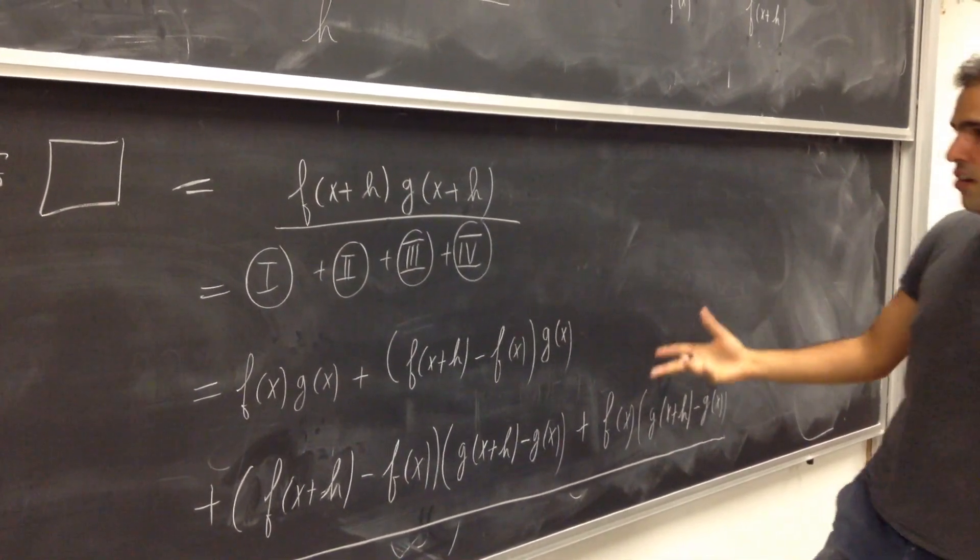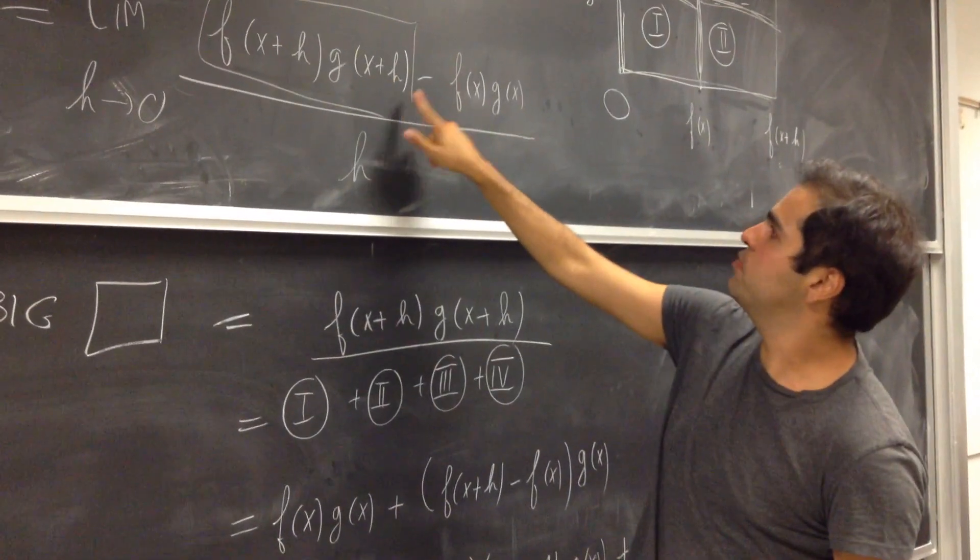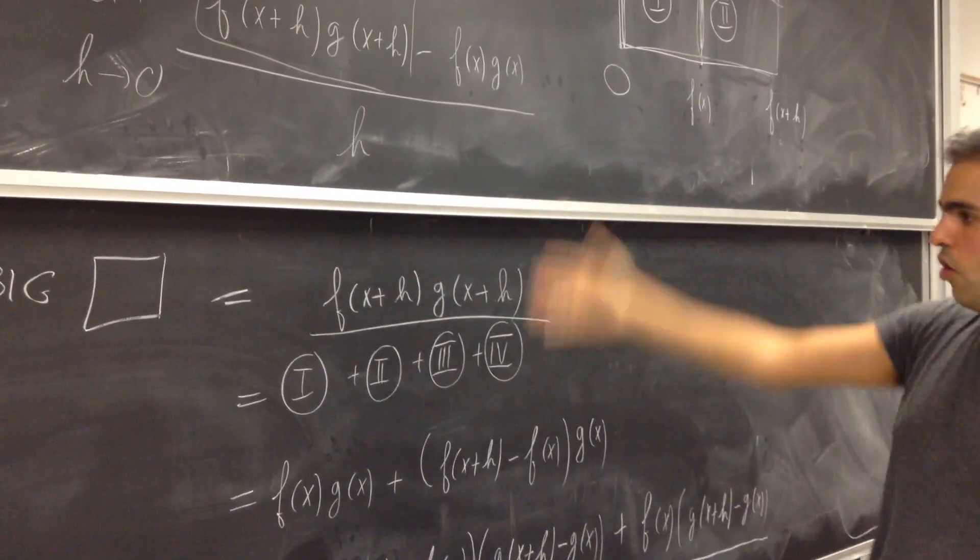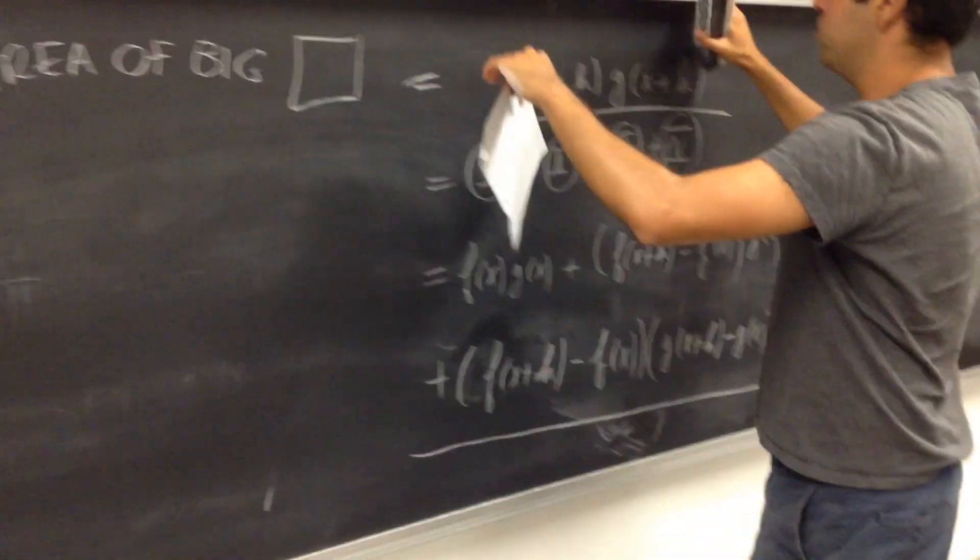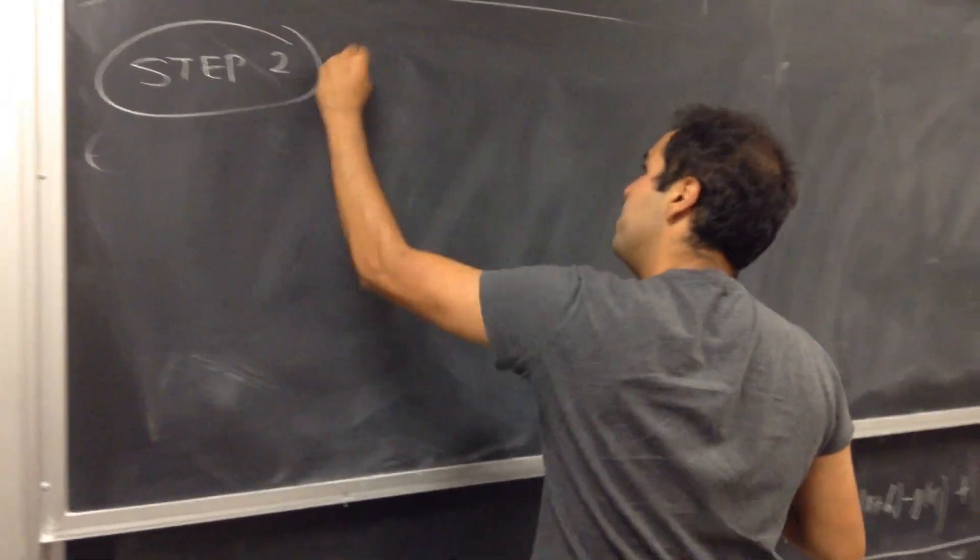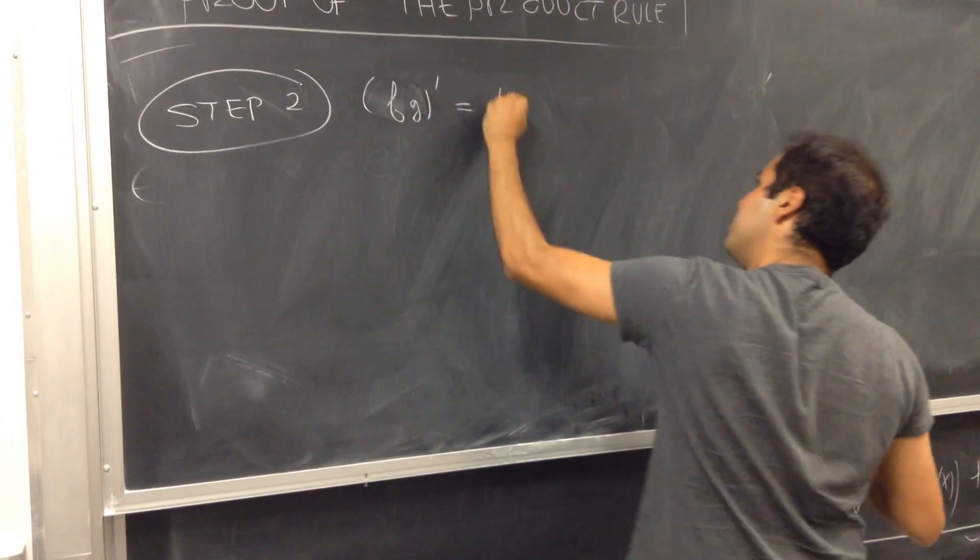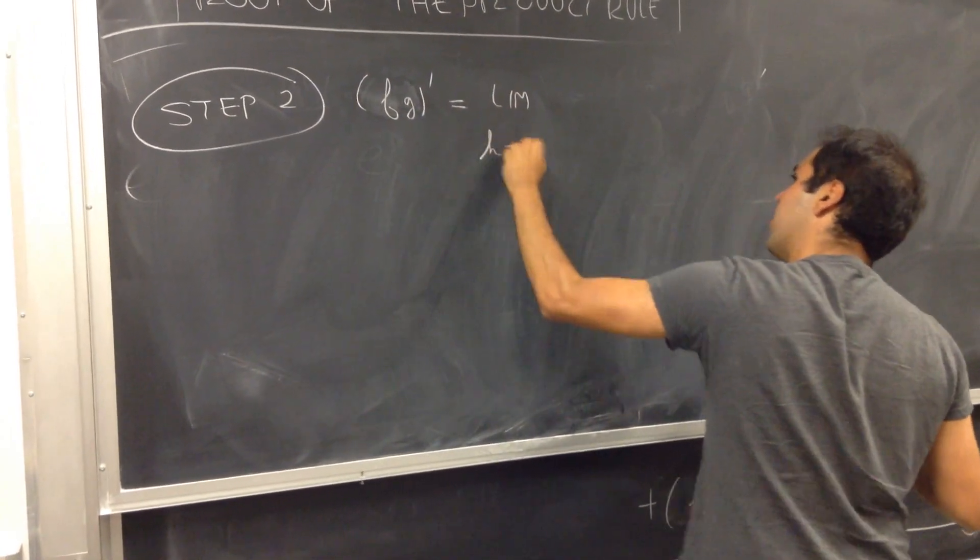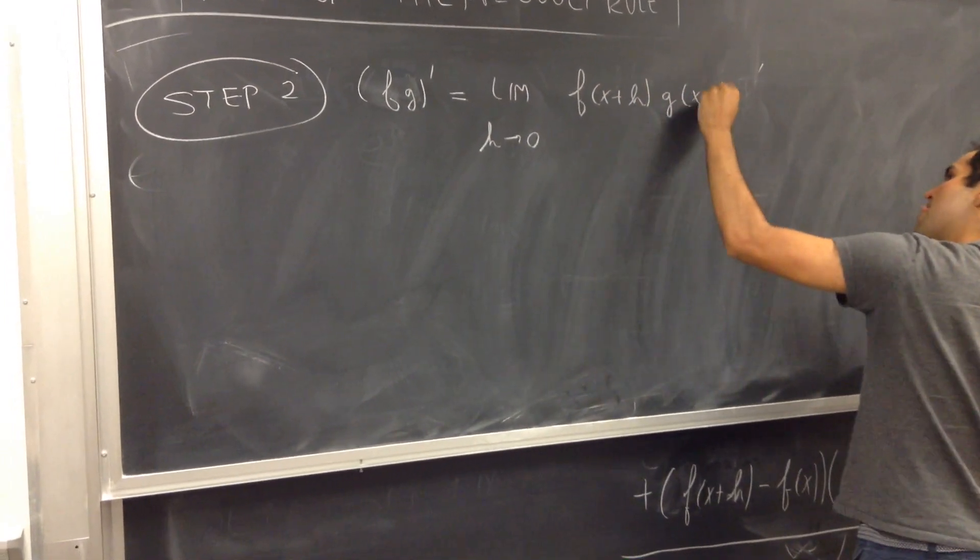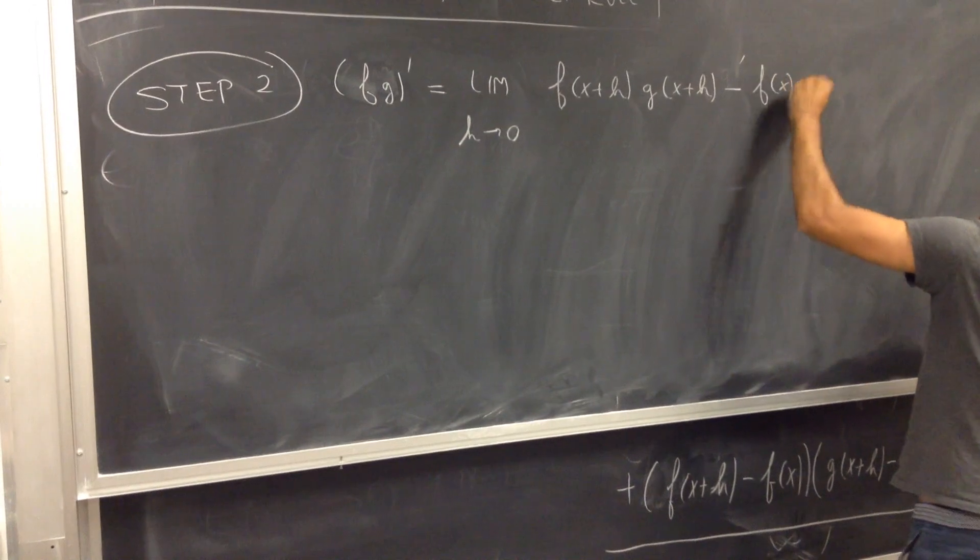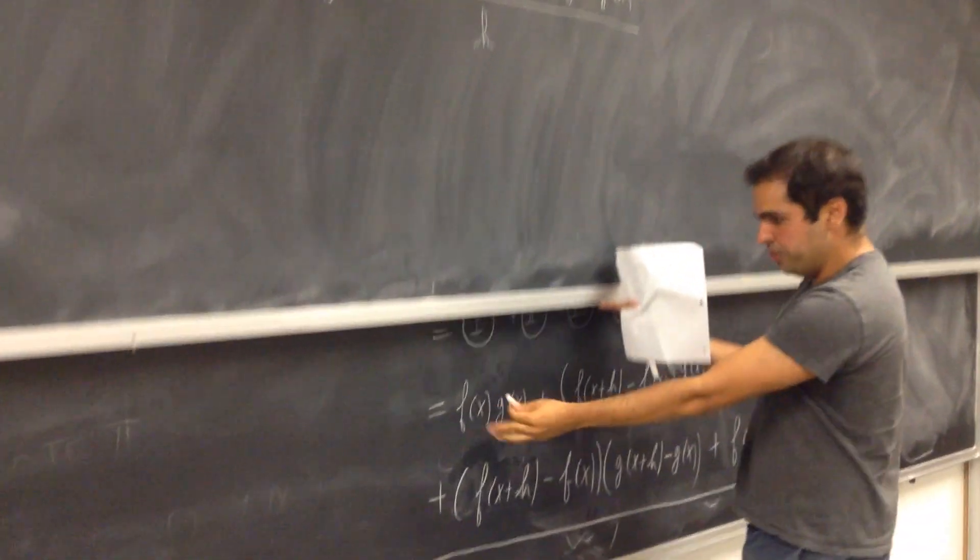Okay, so now, in particular, what we want to do - remember, our goal is to calculate f of x plus h g of x plus h minus f of x g of x over h. Well that's very good, because now we're right at step two. And now let's use this formula.